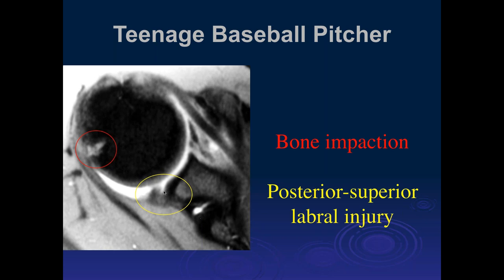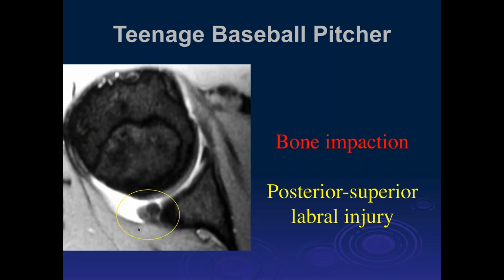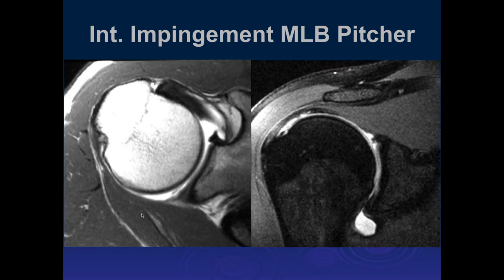There is abnormal signal within the labrum and displacement of the labrum. The next cut shows the labral tear as well as abnormal morphology of the posterior superior labrum. Look at the more normal labrum here — this is what the labrum should look like — here it's all beaten up. This is due to posterior impingement in this young athlete — a teenager. That's posterior impingement.